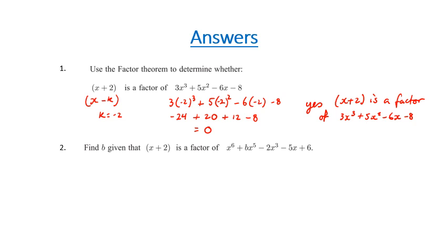The second question says find b, given that x plus two is a factor. So we know our k value here is again minus two, which is coincidental. We then replace everything here with minus two, and that's what I'm doing right now.